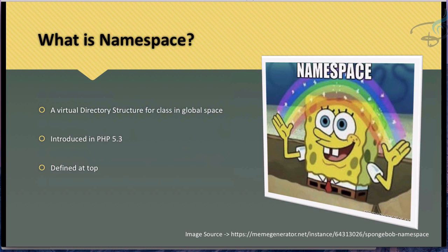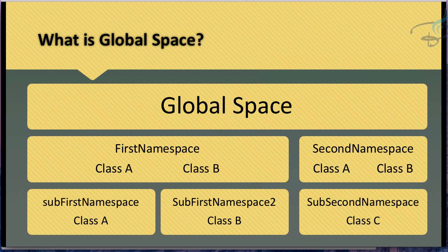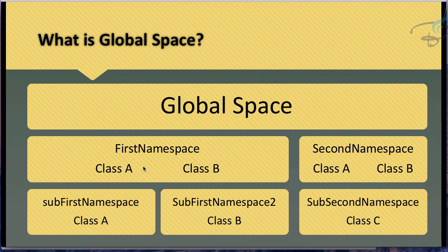Think of global space as the base folder of your project — where you put your main classes. You can create a first namespace and a second namespace, think of these as subfolders inside the global space. You can create Class A and Class B in each namespace, and even sub-namespaces within those. This means you can have multiple Class A definitions that are all distinguishable from one another because they are in different sub-spaces.